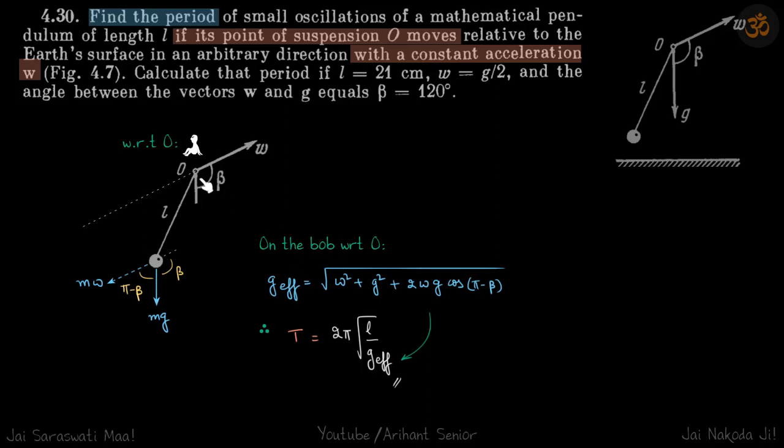On the bob with respect to O, the effective G will be the vector sum of W and G, which equals √(W² + G² + 2WG cos(π - β)). The time period will simply be T = 2π√(L/G_effective). You put that here and this will be our answer.